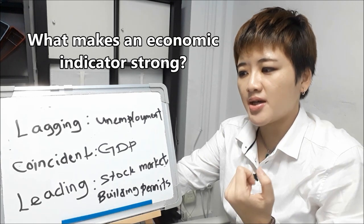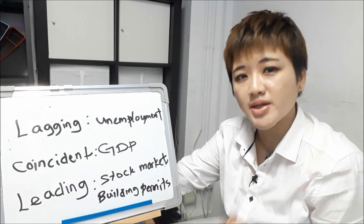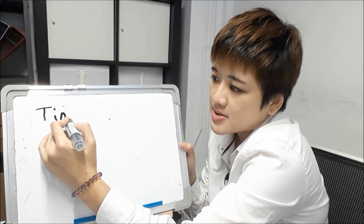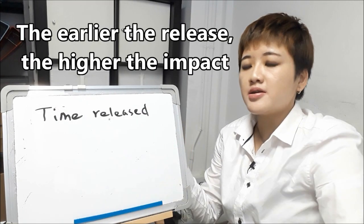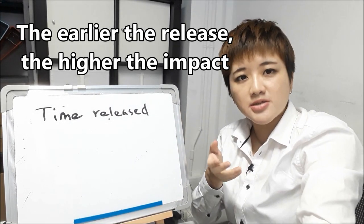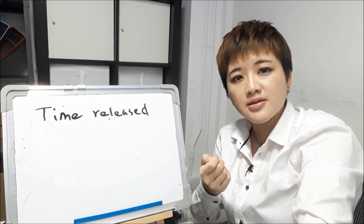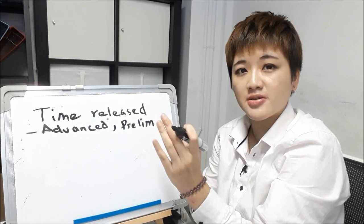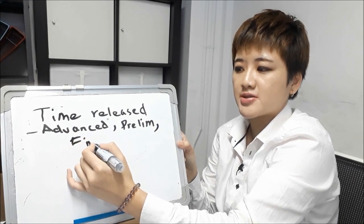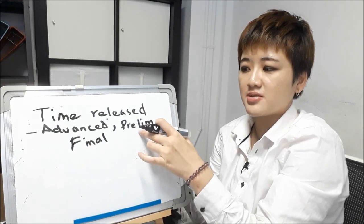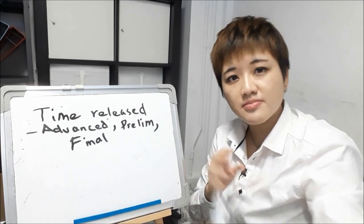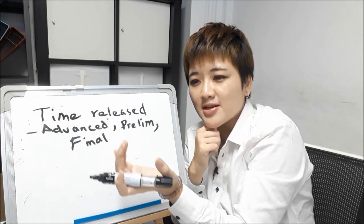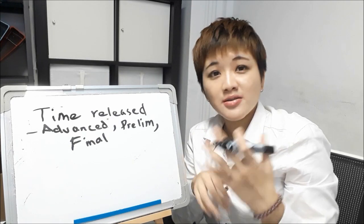You need to understand what makes an economic indicator strong or weak. One factor is the time it is released — the earlier it is released, the higher the impact. Economic indicators go through revisions. GDP, for example, has three releases: the advance data, the preliminary data (a revised version of the advance), and the final release (the most accurate). But people react more to whatever is released first. If the final data comes out way beyond expectations, that is going to cause the markets to move a lot.